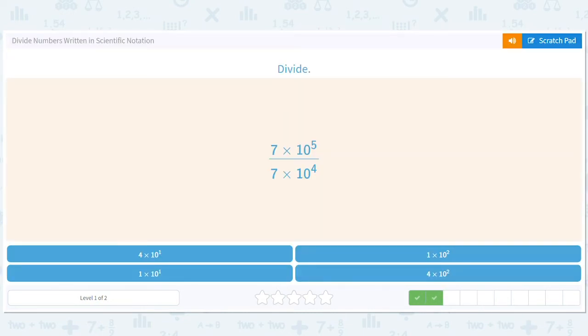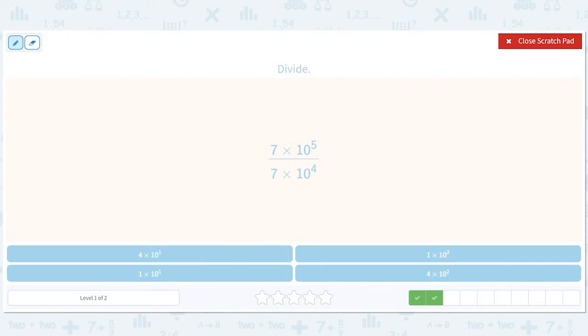Okay, how about this? Sevens cancel out. 5 minus 4 is 1. So we get 10 to the first. There's no number in front of it, so we make it a 1. Why not? So we get 1 times 10 to the first.